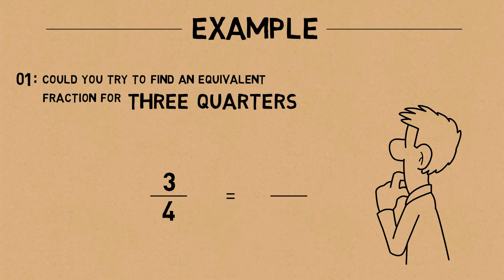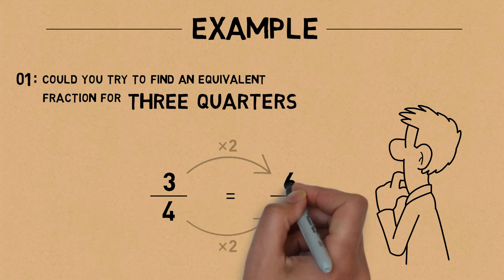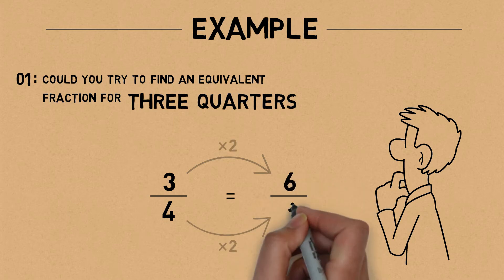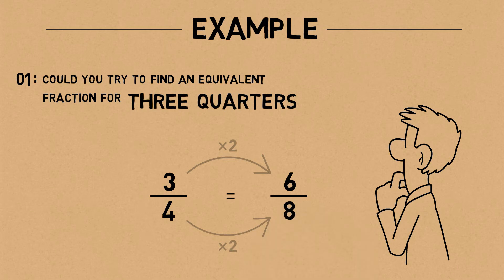For three quarters, we could multiply the numerator and the denominator by two. Three times two is six, and four times two is eight. So six eighths is an equivalent fraction of three quarters.